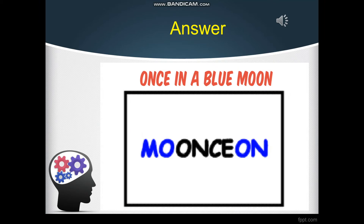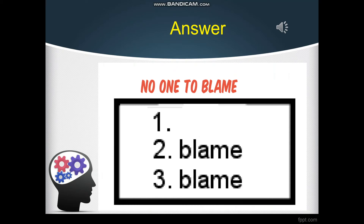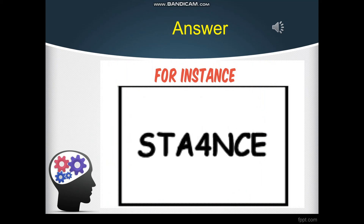The answer to that one is 'once in a blue moon.' Activity four: we have number one blank, number two 'blame,' number three 'blame' — the answer is 'no one to blame.' And the last one: S, T, A, number four, N, C, E — the answer is 'for instance.'